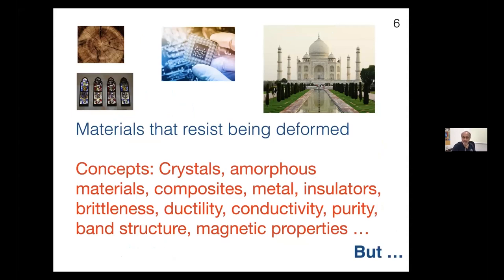Materials that resist being deformed include the examples I gave: crystals, amorphous materials, composites, metals, insulators. We talk about properties like brittleness — is it easy to break them? Ductility — can you draw them into long wires? We consider conductivity, purity, band structure, magnetic properties, and so on. All of this is a language we're accustomed to using for materials that resist being deformed.